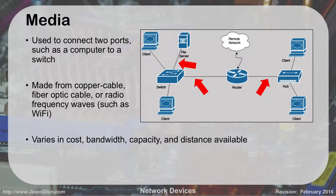Media is the cables or wireless signals we use to connect two ports, such as a computer to a switch or a switch to a router. These can be made out of copper cable, fiber optic cable, or radio frequency waves for wireless networking. They vary in cost, bandwidth, capacity, and distances. We'll have an entire lecture on media and the different types available.